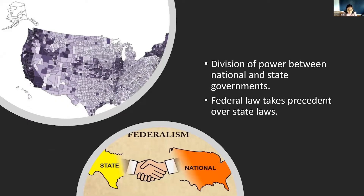I'd like to start with the type of structure of government that the U.S. has. We have what's called federalism, where we have one national government and then state governments, so the power is actually a division of power. The state must abide by all federal laws over the state laws, and as we keep going down the layers of government, there's county and local, which must follow the rules of the higher governments.